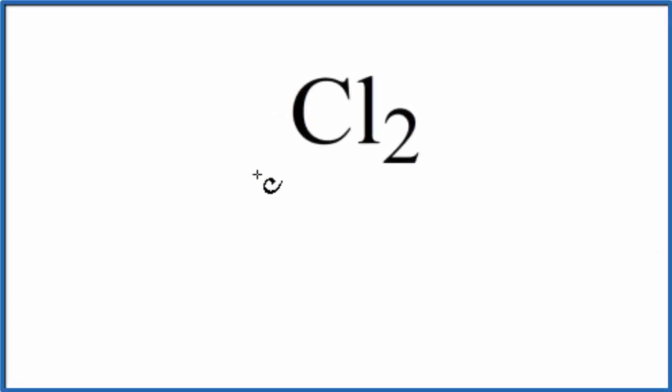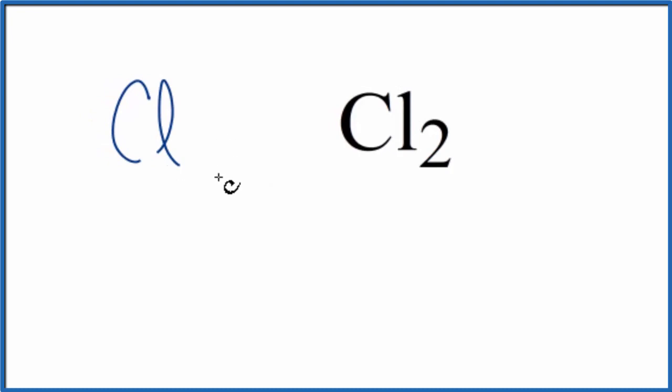In this video, we'll take a look at the number of atoms in Cl2, chlorine gas. This is a diatomic gas. So first off, you won't have just chlorine by itself. It'll always be Cl2.